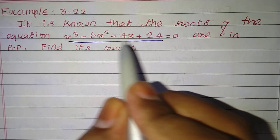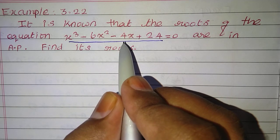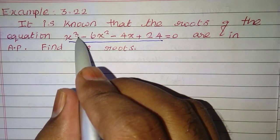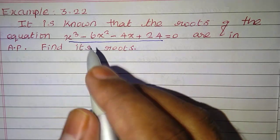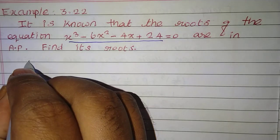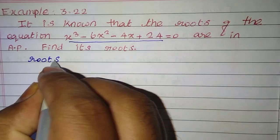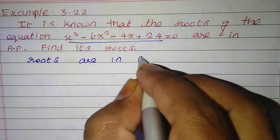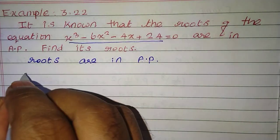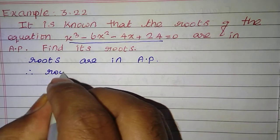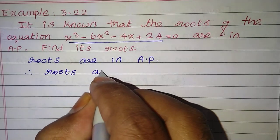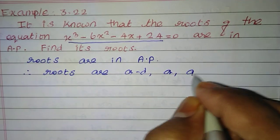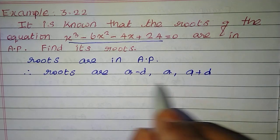Additional information is that the roots are in AP. So 3 roots are in AP. Therefore, roots are a minus d, a, a plus d.